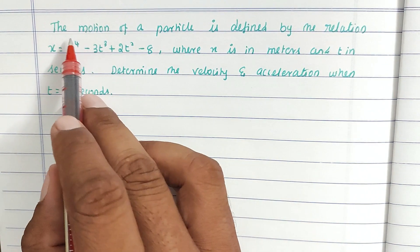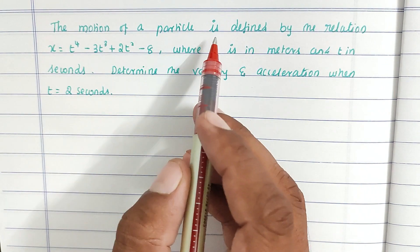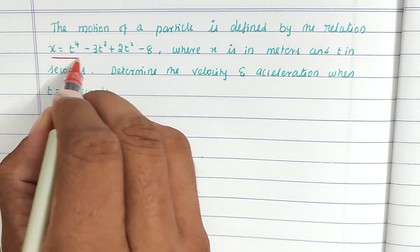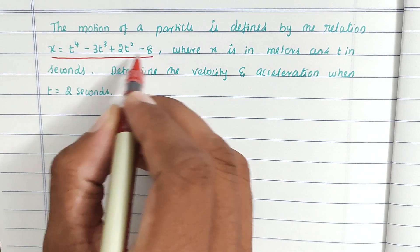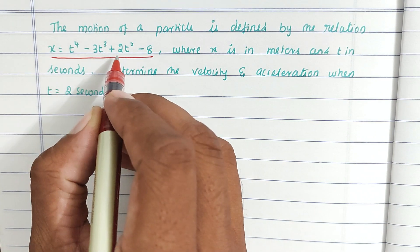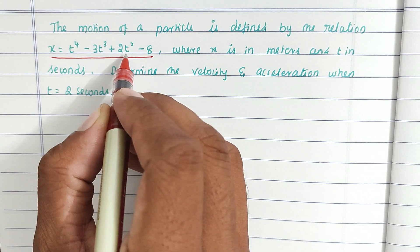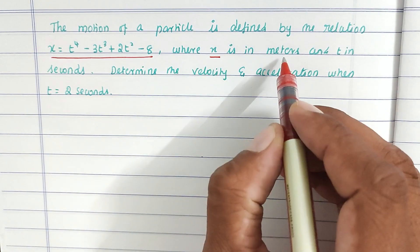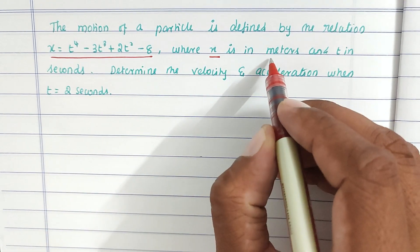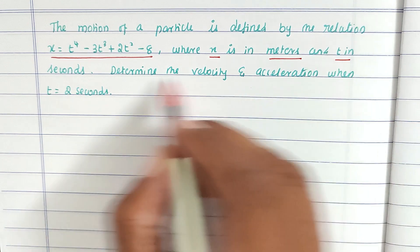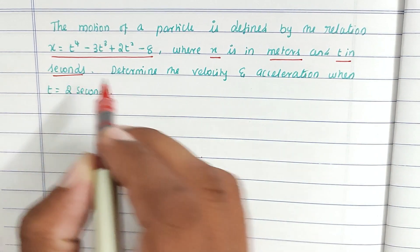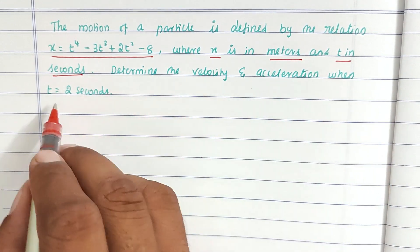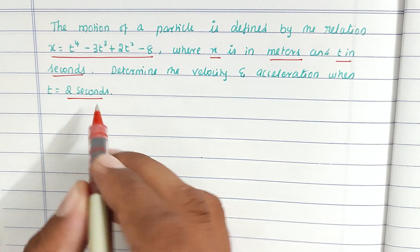The problem is: the motion of a particle is defined by the relation x equal to t power 4 minus 3t cube plus 2t square minus 8, where x is in meters and t is in seconds. Determine the velocity and acceleration when t equal to 2 seconds.